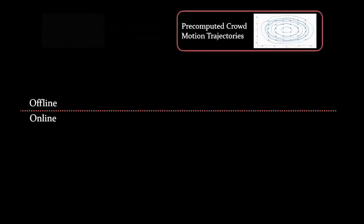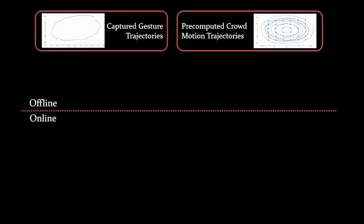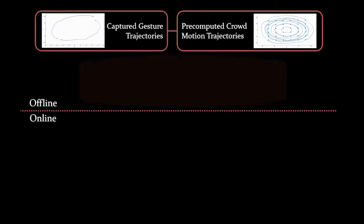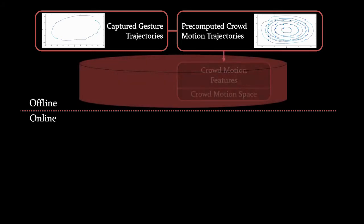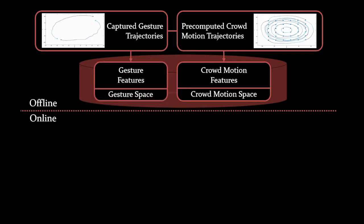We first precompute a set of cloud motion trajectories. For each of them, we capture the corresponding gesture trajectories from a multi-touch device. We then build a database by extracting cloud motion features from the cloud motion trajectories, thereby forming the cloud motion space. We also extract gesture features from the gesture trajectories to form the gesture space.